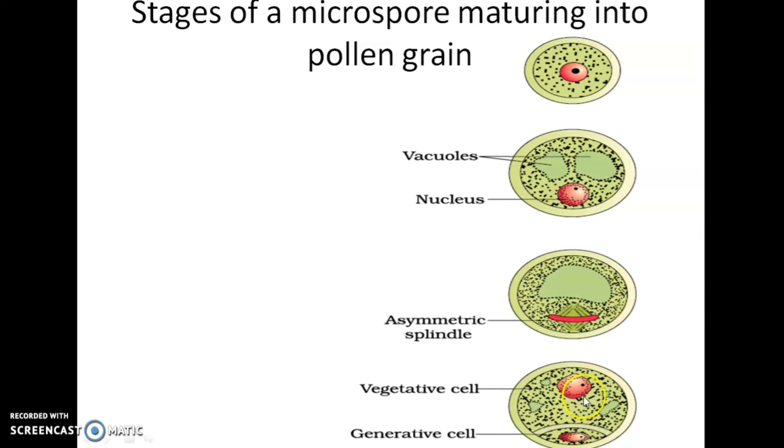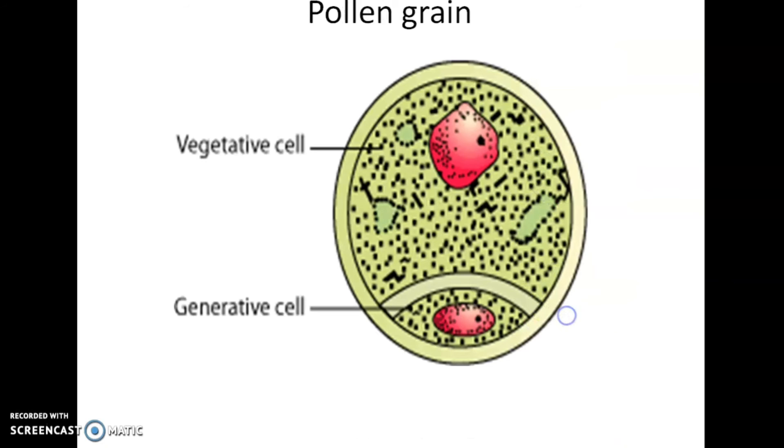The vegetative cell is bigger, has abundant food reserve, and a large irregularly shaped nucleus. The generative cell is small and floats in the cytoplasm of the vegetative cell. It is spindle shaped with dense cytoplasm and a nucleus. In over 60 percent of angiosperms, pollen grains are shed at two-cell stage. In remaining species, the generative cell divides mitotically to give rise to two male gametes before pollen grains are shed, so in 40 percent of angiosperms it is in three-cell stage.